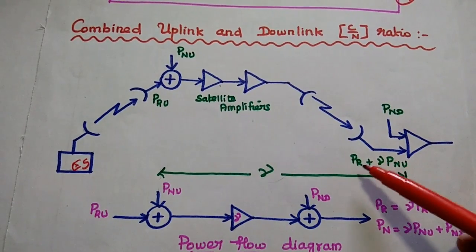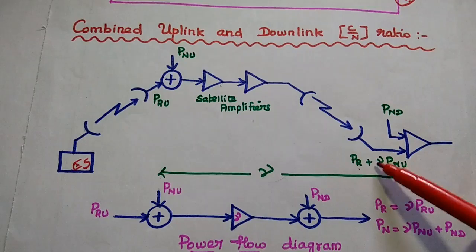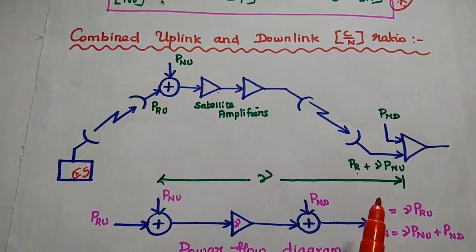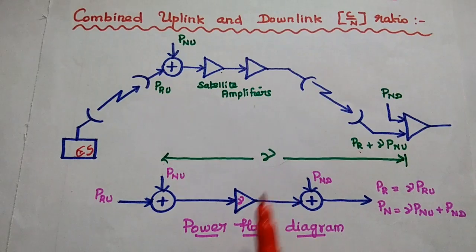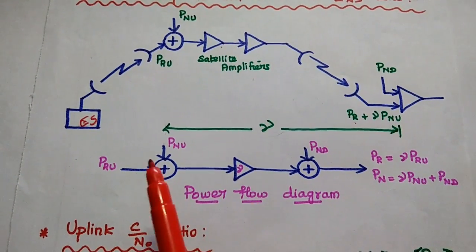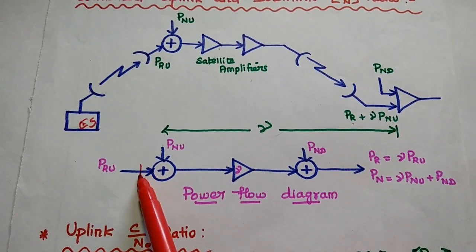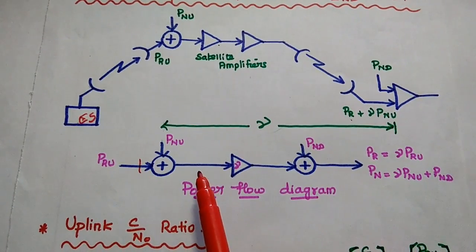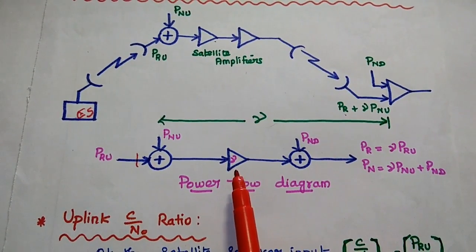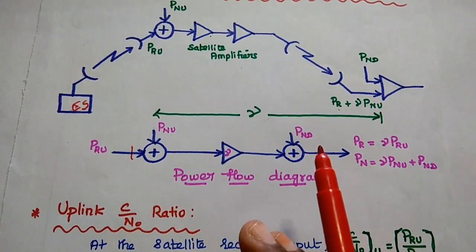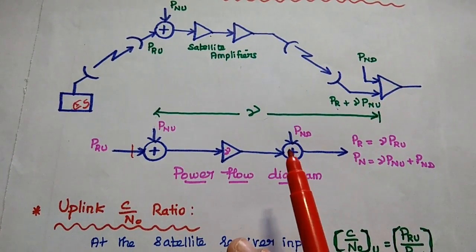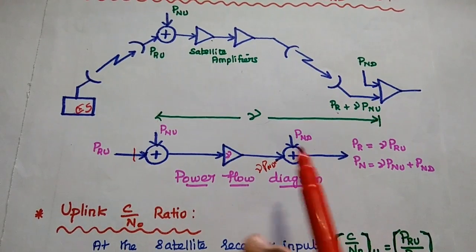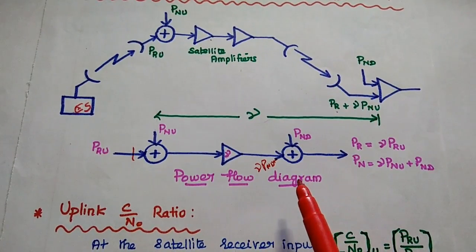The received signal at the EIRP station can be represented as PR plus gamma × PNU. This gamma × PNU is the noise power received from the uplink process amplified by gamma. This signal system can be represented using a power flow diagram. At the satellite receiver input side, we have two signals: the uplink carrier power and the noise power due to the uplink process. These are amplified using the system gain factor gamma. At the receiver side of the EIRP station, we have gamma × PNU along with PND — the overall noise power plus the received power for the downlink process.